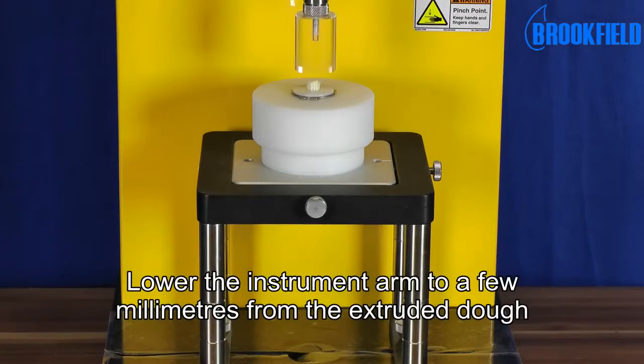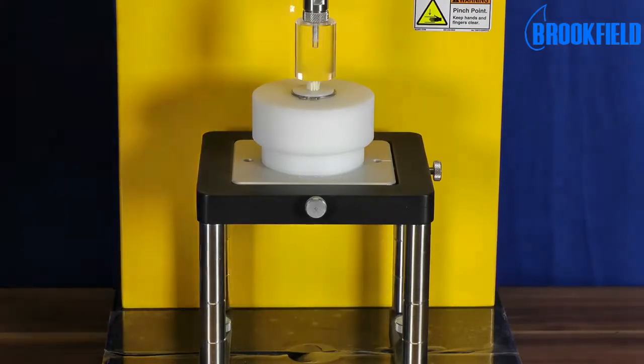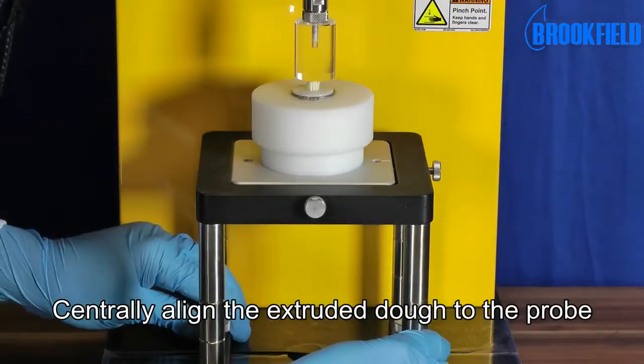Lower the instrument arm to a few millimeters from the extruded dough. Centrally align the extruded dough to the probe.